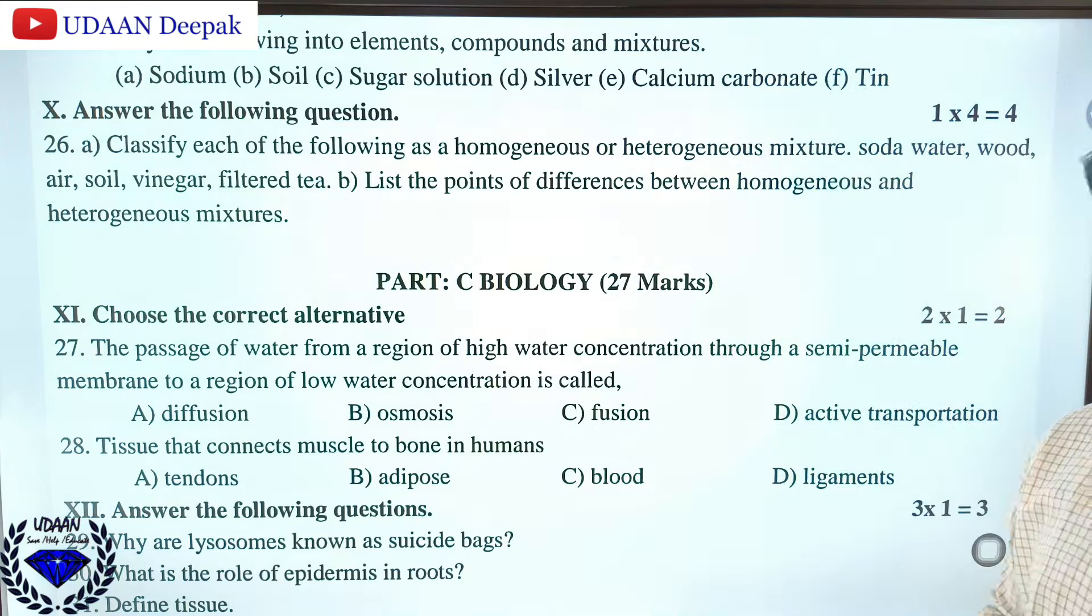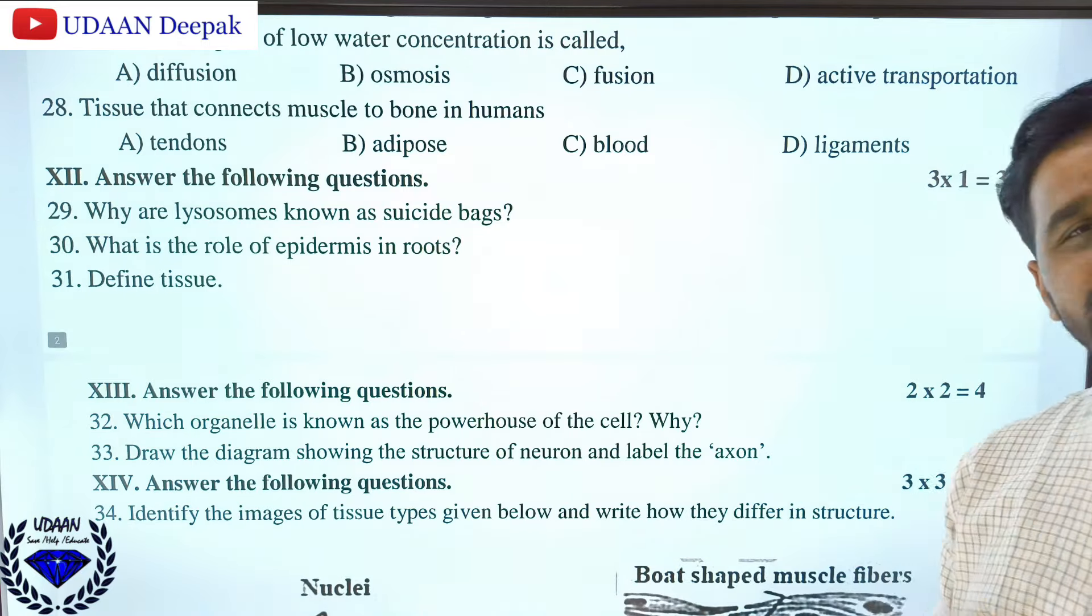Coming to the biology part, which carries 27 marks. If you are finding this helpful, kindly like, share, and subscribe. The passage of water from a region of high concentration through a semi-permeable membrane to a region of low water concentration is called osmosis. The tissue that connects muscle to bone in humans is tendons, whereas ligament connects bone to bone. Lysosomes are called suicide bags of the cell because when cells get aged, they consume and remove them.